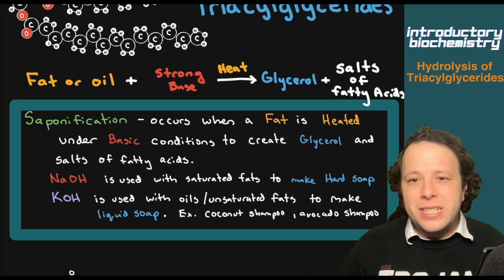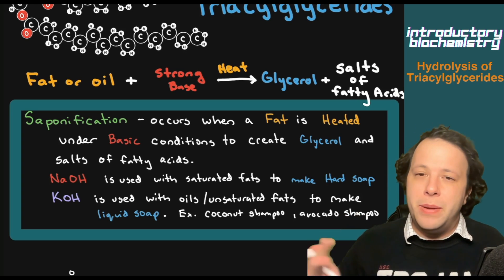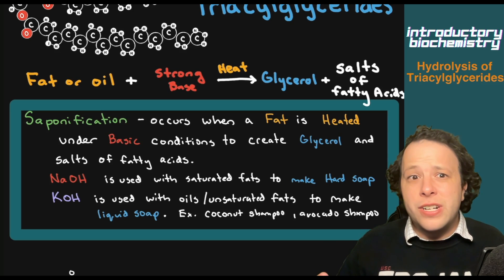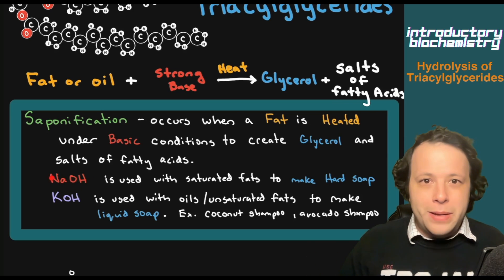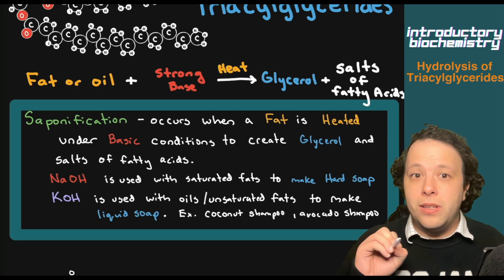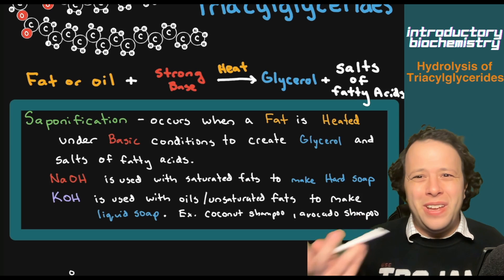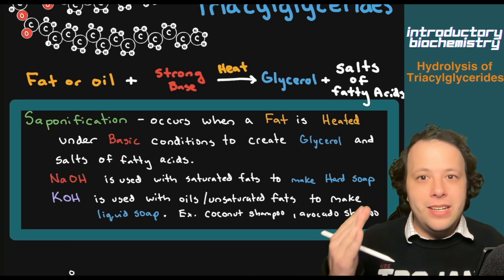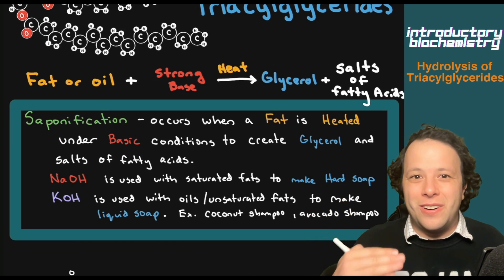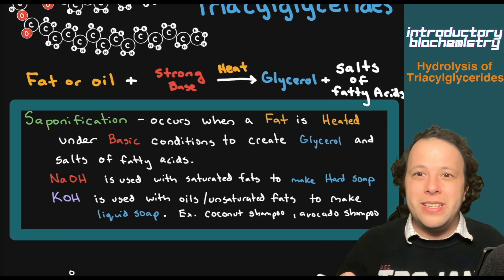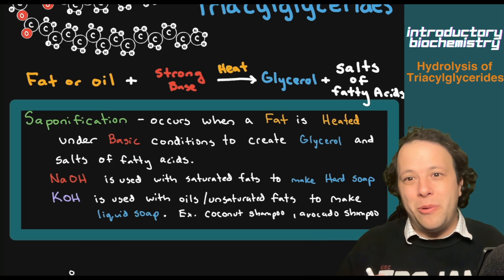For example, if you have a bar of soap at your sink or in your shower, that was made by adding sodium hydroxide or lye to a saturated fat with all single bonds. That's used to make hard soap. If you have soaps shaped like different things, that's because it was hard soap made from saturated fat, which was originally more solid.